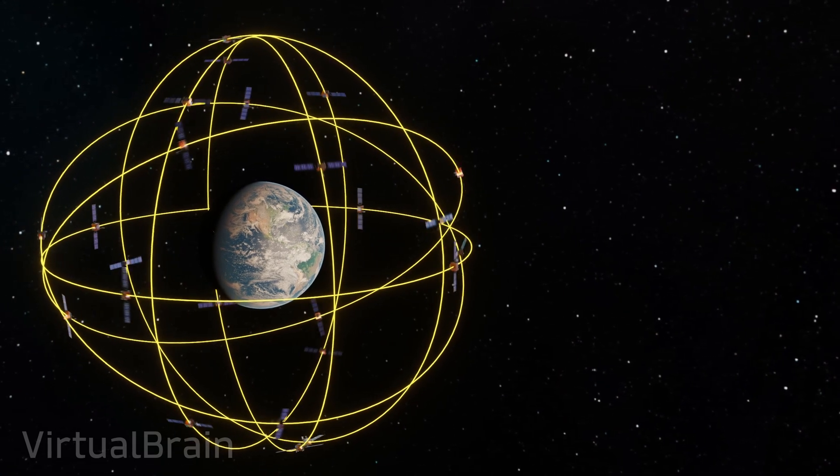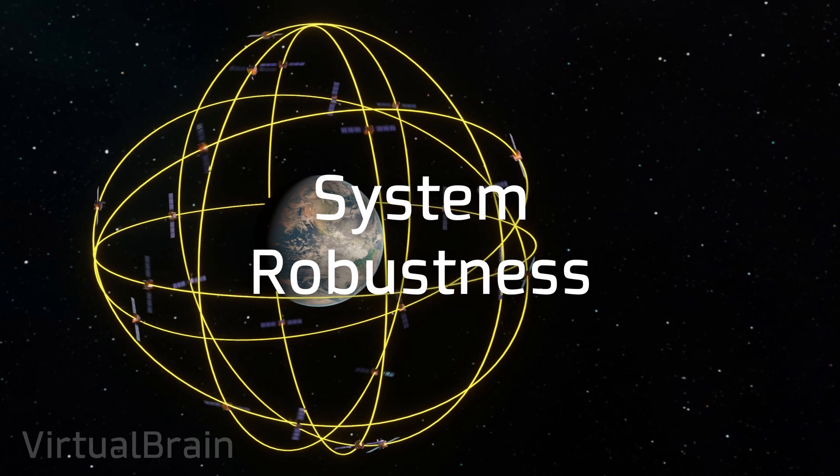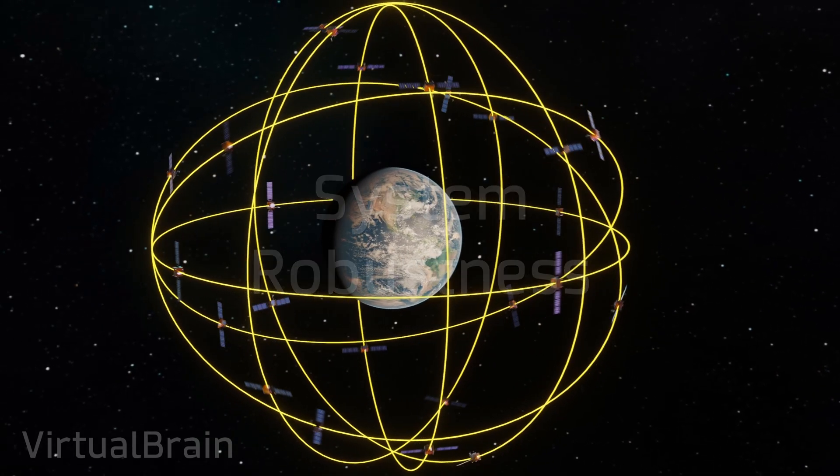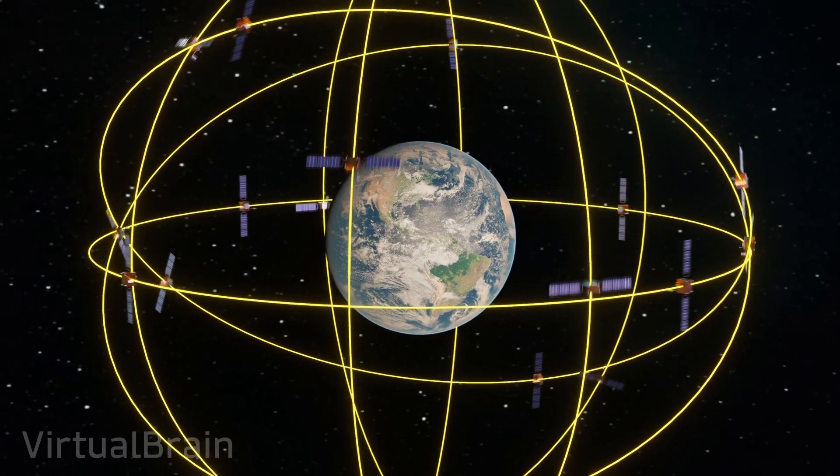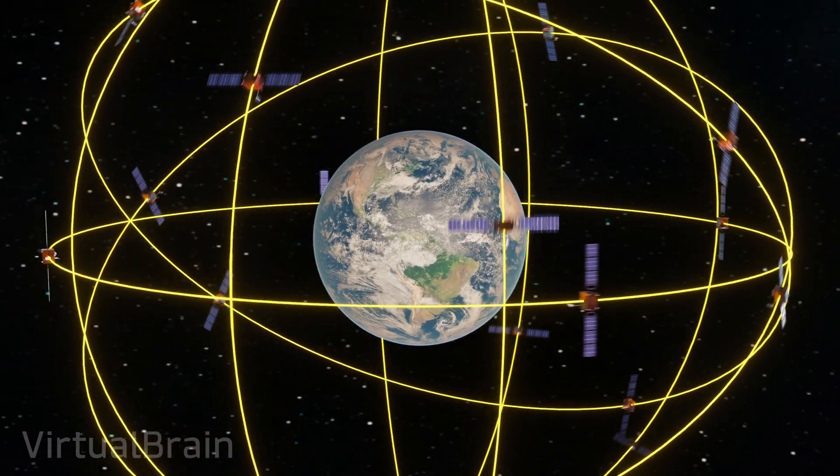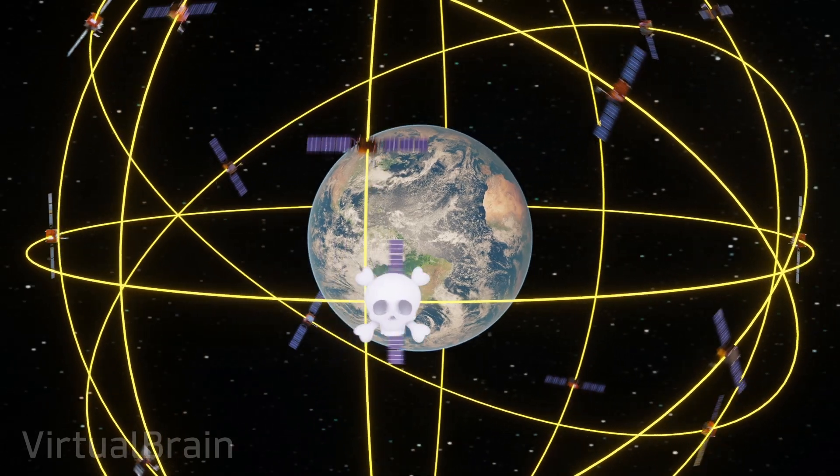And the second reason is the robustness of the available information. A greater number of satellites makes it possible to have more information than necessary, making the system more robust in the calculations in case any of the satellites are lost or the signals have an error.